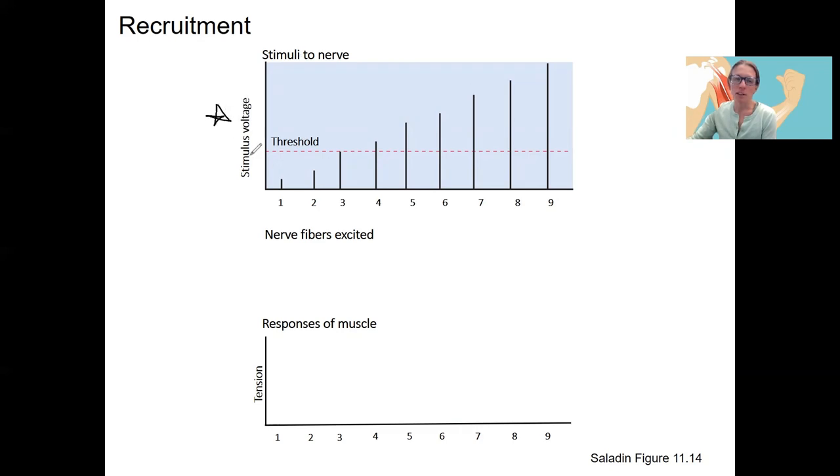We've got a stimulus here with increasing threshold voltage, so increasing strength. That's what the voltage is, is the strength of the stimulus. I'm going to draw for you here the proportion of nerve fibers that are excited and the response of the muscle. So first of all, we've got below threshold. This should be muscle fibers. Below threshold, we're going to have no muscle fibers respond because we're below threshold.